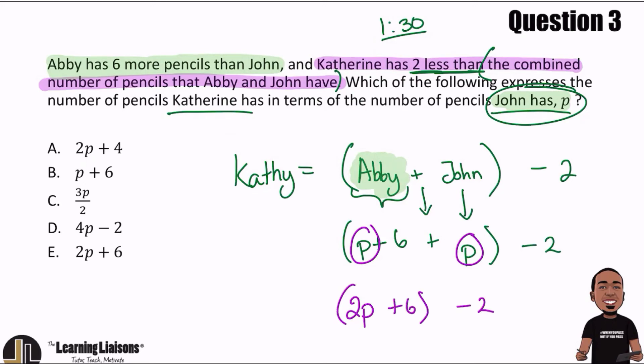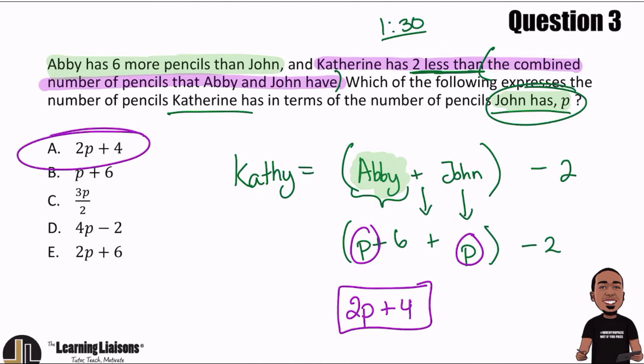There's nothing stopping us from removing the parentheses, and six minus two turns into four. So 2p plus 4 is our answer, meaning A is the correct choice.